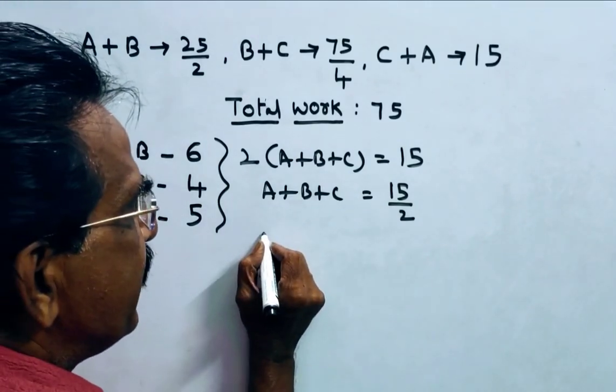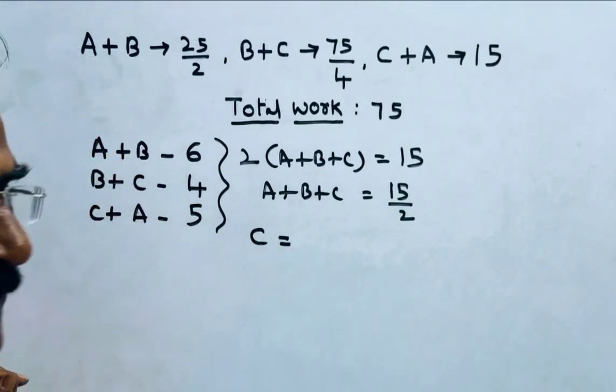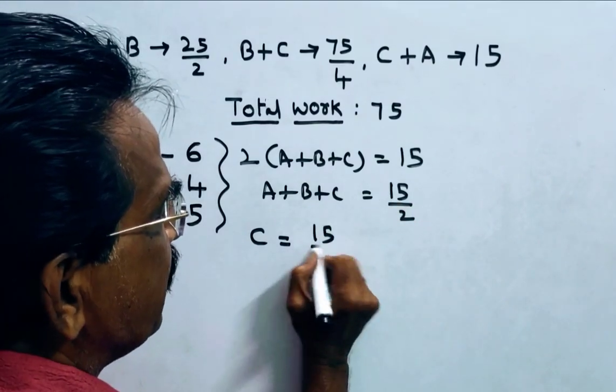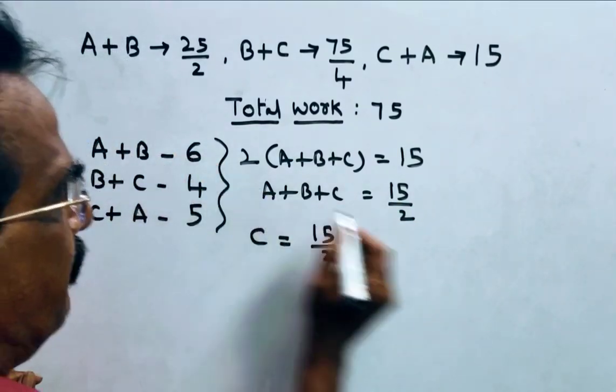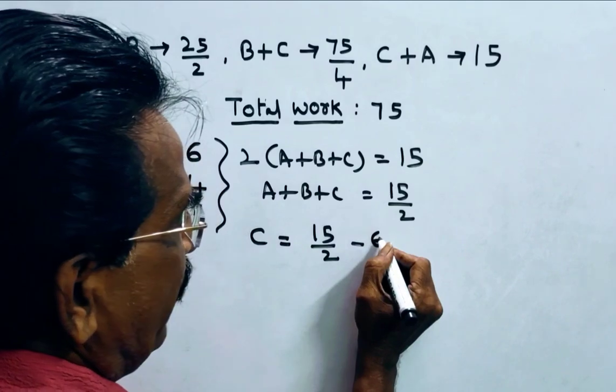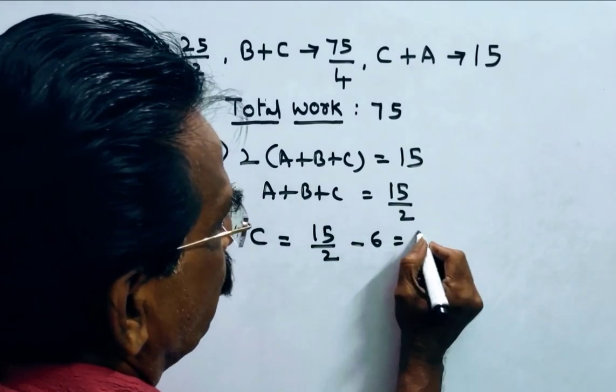So C, how many units per day C can do? A plus B plus C minus A plus B. So, 12, 15 minus 12, 3 by 2, 3 by 2.